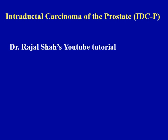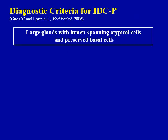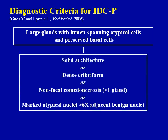I will not talk too much about intraductal carcinoma of the prostate, because Dr. Shah made an excellent YouTube tutorial — if you are interested in this topic, I encourage you to check out that tutorial. But I do want to show you the diagnostic criteria for intraductal carcinoma proposed by Gore and Epstein, which is the most commonly used diagnostic criteria. For any large glands with lumen-spanning atypical cells and preserved basal cells, if you see any of the four features listed here — solid architecture, dense cribriform, non-focal comedic necrosis involving more than one gland, or marked atypical nuclei at least six times the size of adjacent benign nuclei — then you can make a diagnosis of intraductal carcinoma in prostate biopsies.